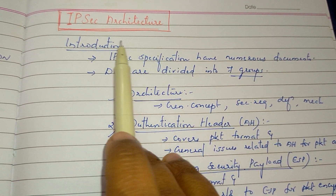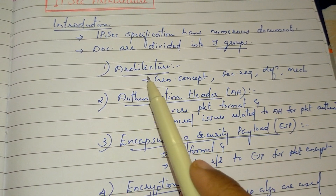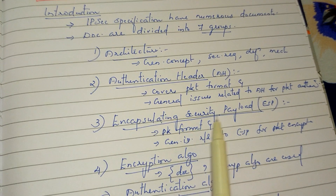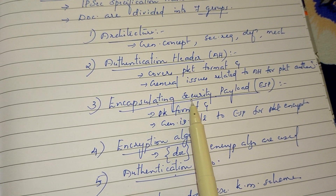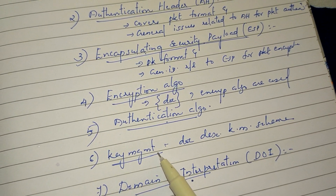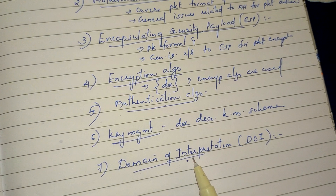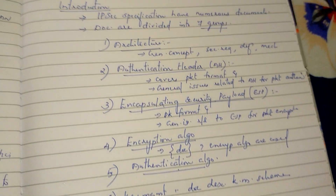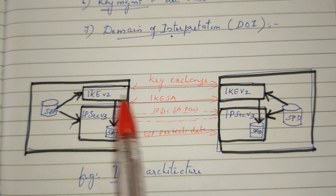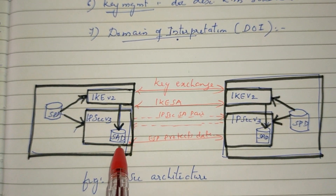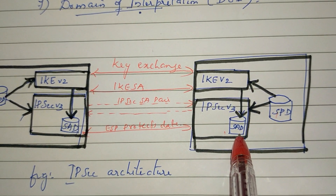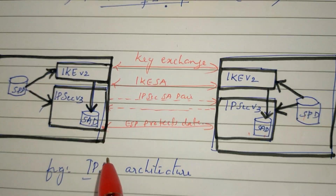So in the IP Security Architecture, the documents are defined in 7 groups: Architecture, Authentication Header, Encapsulating Security Payload, Encryption Algorithm, Authentication Algorithms, Key Management, and Domain of Interpretation. The architecture also defines two types of databases: the SPD (Security Policy Database) and the SAD (Security Association Database). We also have key exchange and protect data mechanisms, and the Security Association, which is identified by three parameters: Security Parameter Index, IP Destination Address, and Security Protocol Identifier.